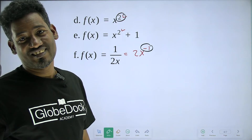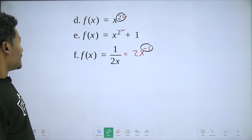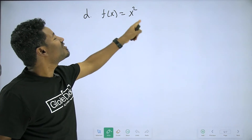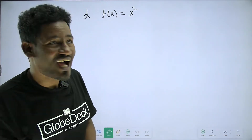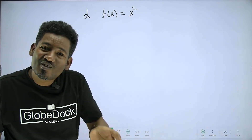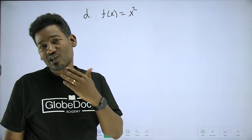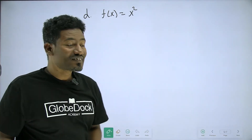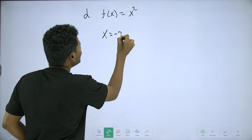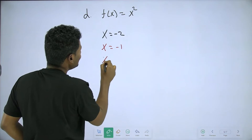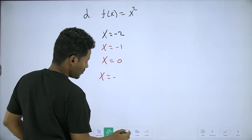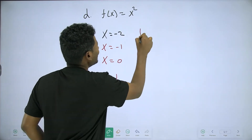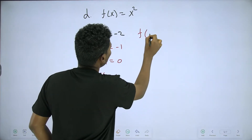If f of x is equal to x squared. Let's see: x is equal to negative 2, negative 1, 0, 1, 2. We will have a table for x. f of x is equal to x squared.